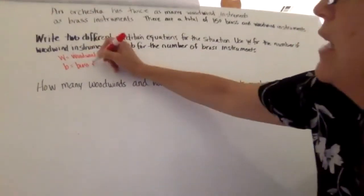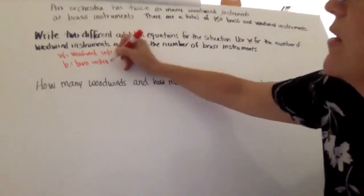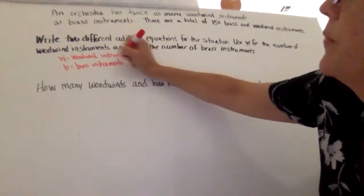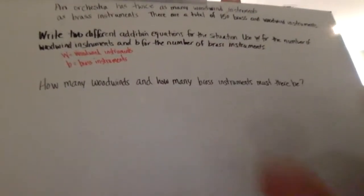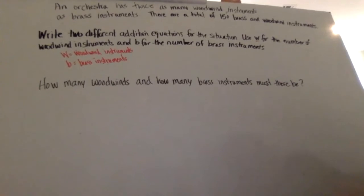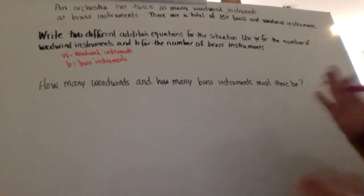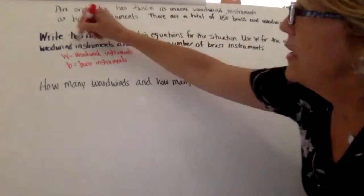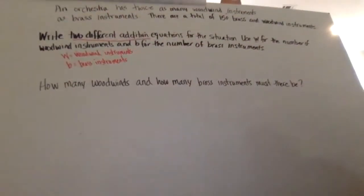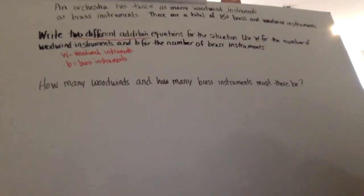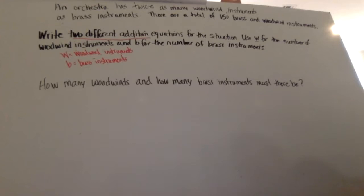And b equals brass instruments. Remember, we could have used any letters, but the problem specifically asked us to use these — w for woodwinds, b for brass instruments. I wouldn't want to choose 'i' because both of them are instruments. Now, I know I need to write two different addition equations, so I want to look at the information up here. What are some facts we could put together? An equation is just stating some facts — what's equal to something else. What do you see? What are some keywords we could be looking at?